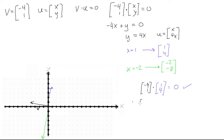And if we take the dot product of negative 4, 1, dot this vector we found, it was negative 2, negative 8. Well, we get negative 4 times negative 2 is 8, plus 1 times negative 8, which is minus 8, and we get 0.